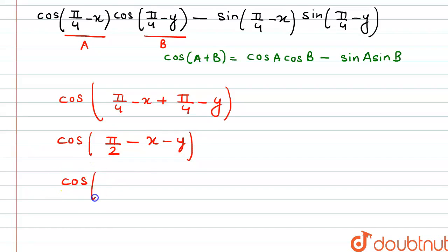Or, we can also write this as cos of pi by 2 minus, if we take minus common, we get x plus y. And here we have to use the formula, that cos of pi by 2 minus x is equal to sin x.